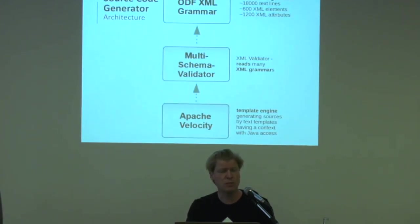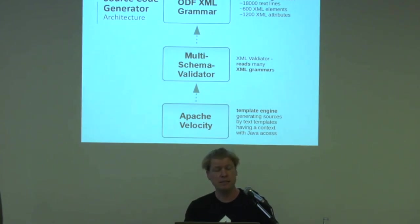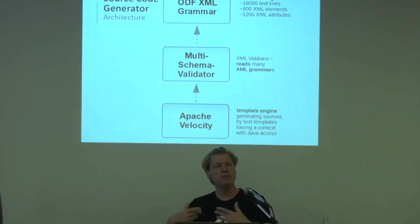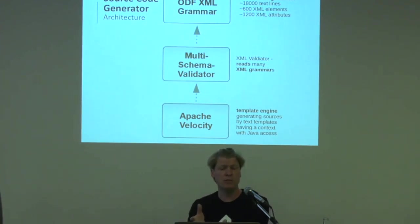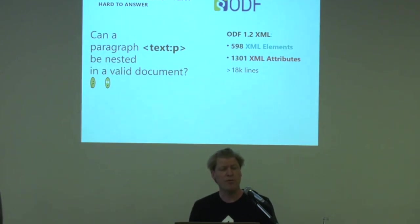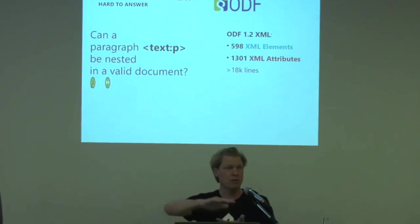What is the source code generator? There's always the grammar — it's in RelaxNG grammar. This is being loaded by the multi-schema validator. Something like a set of Velocity templates, where you have text files with iterations to generate, for example, every method — for every child element, a child method is generated, or for attributes. The idea is we have a simplification here by code generation: the user gets a typed DOM tree and doesn't have to read the grammar, because most of it has been generated.